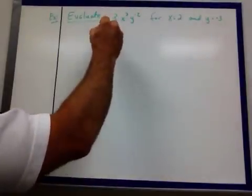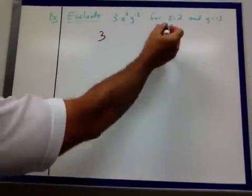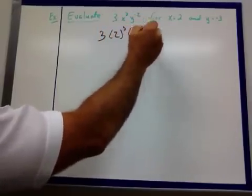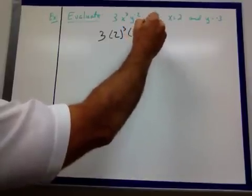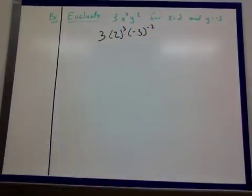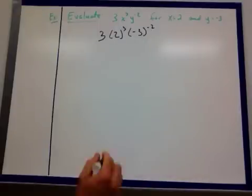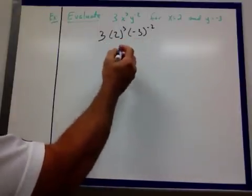So we're going to get 3, x is 2, so that's going to become 2 cubed, and y is negative 3, and that's to the negative 2 power. Don't forget your PEMDAS - Please Excuse My Dear Aunt Sally. We're going to take care of our exponents before we go multiplying anything across here.